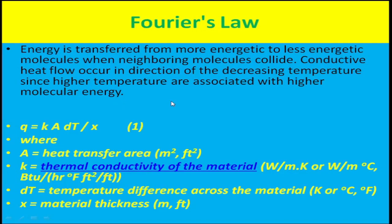Coming on to quantification of the three modes of heat transfer. For conduction, we use Fourier's law of heat transfer. The equation is Q = −KA(dT/dx), where Q is the rate of heat transfer in watts (joules per second). K is the thermal conductivity of the material with units of watt per meter Kelvin or watt per meter degree Celsius. A is the area through which heat is being transferred, and dT/dx is the temperature gradient — the rate of change of temperature with respect to thickness.